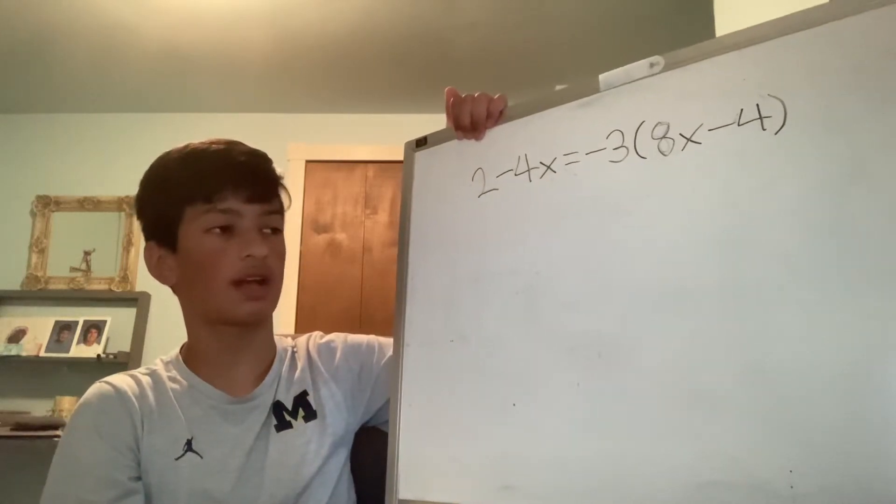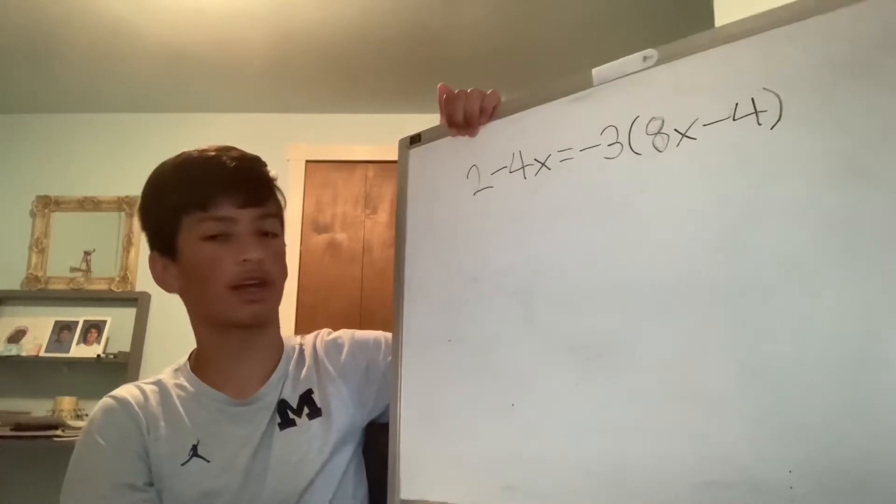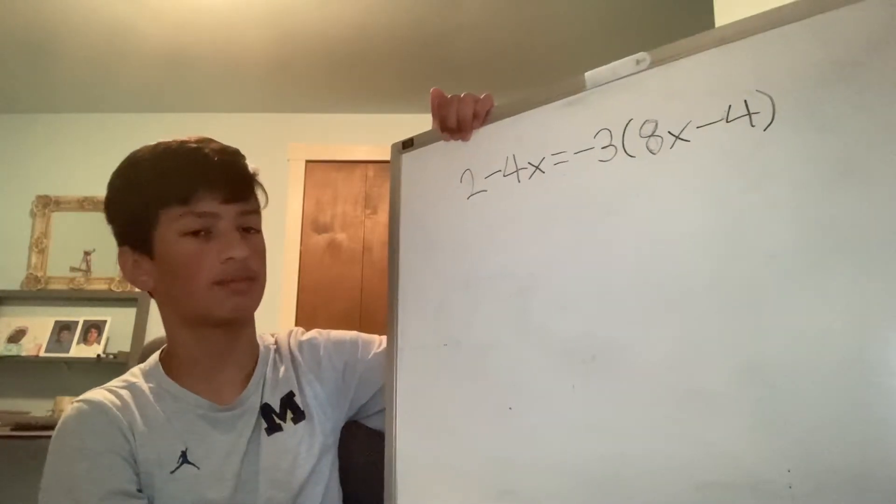Hey, my name is Case Merig, and today I will be solving the equation 2 minus 4x equals negative 3 times 8x minus 4.